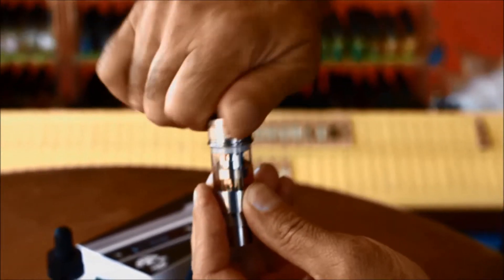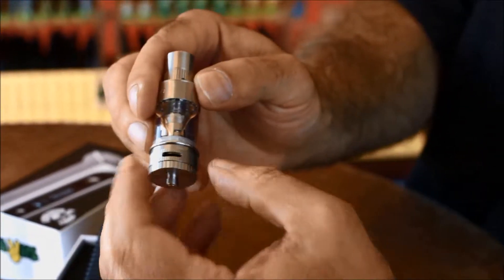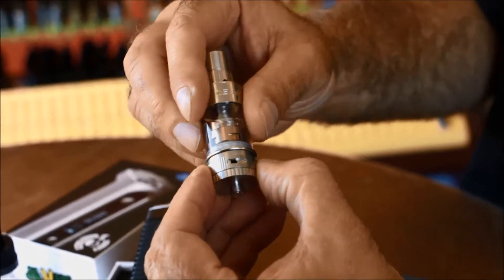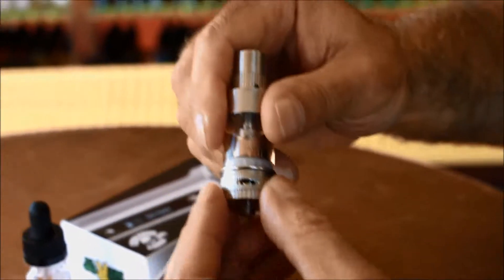You'll notice the collar on the bottom of the tank has holes for adjustable airflow. You can twist it to find the airflow setting you like. The larger holes will create more vapor, and the smaller settings will create less.